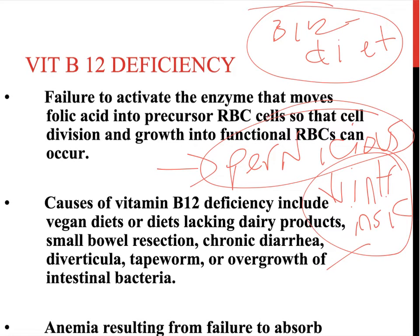Treatment for pernicious anemia requires B12 injections rather than oral supplements, since the patient cannot absorb oral B12 without intrinsic factor. When someone is diagnosed with B12 deficiency, you must determine the exact type to treat it appropriately. Signs and symptoms of B12 deficiency include the typical anemic symptoms such as fatigue and shortness of breath, as well as glossitis — a beefy red tongue — and poor balance due to nervous system effects from decreased functioning red blood cells.